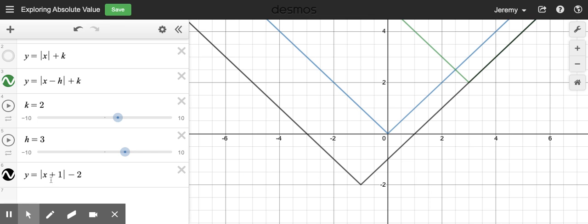Notice that, well, k is easy. That's negative two. h is a little tricky. Because I'm adding one, my value for h is actually negative one.